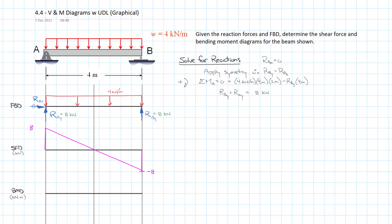Now to prepare ourselves for the bending moment diagram, I want to note what the areas are under the shear force diagram. The first area — from A to midspan — is one half times 8 times the base of 2 meters, which equals 8. The second area from midspan to B is equal to 8 as well. We're going to use those to move forward, so up to the midpoint we have an area under the shear force diagram equal to 8.